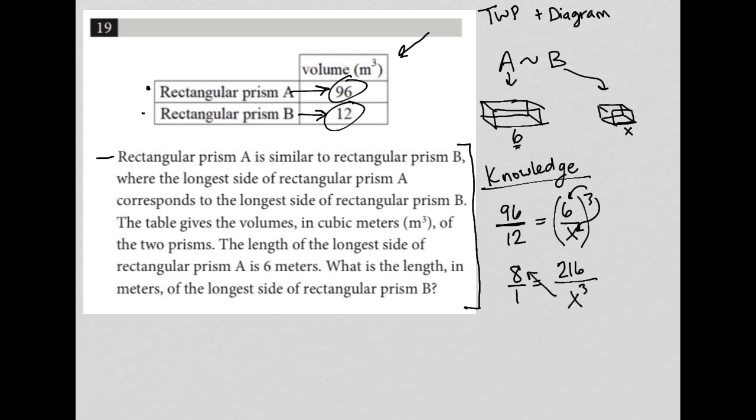Now I'm going to cross-multiply because that's what we do when we have two fractions equaling each other, and that leads me to have 8x cubed equals 216. I'm solving for x, which means I want to divide both sides by 8. This would give me x cubed equals, and I don't know how many times 8 goes into 216. I cannot use my calculator, so I'm going to just do the math on the side over here.